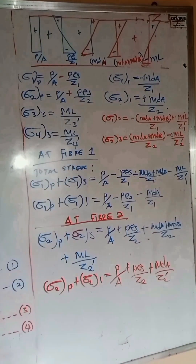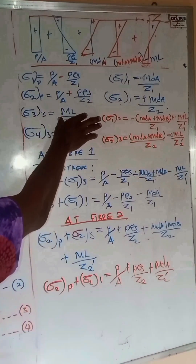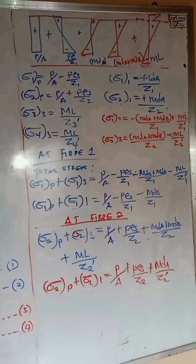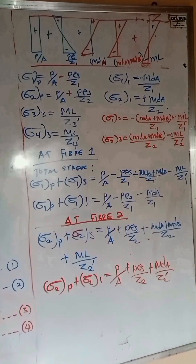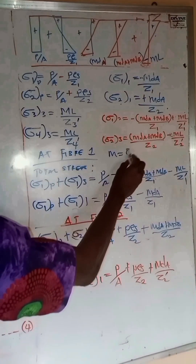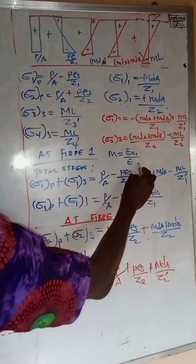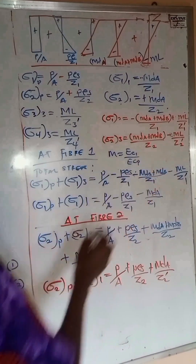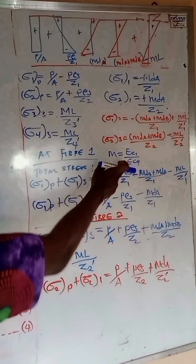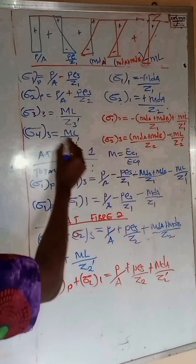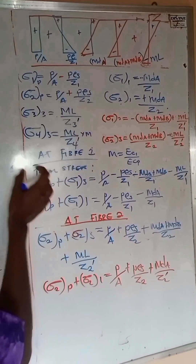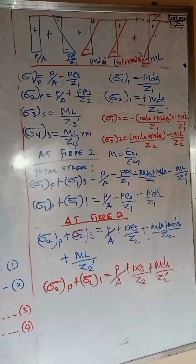The sectional modulus for fiber three is taken from the entire composite section. For fiber four, because of the presence of the composite section — the in-situ slab and precast section together — we modify the section using the modular ratio m, which is the ratio of the modulus of elasticity of the in-situ concrete to the modulus of elasticity of the precast concrete. This modular ratio m is applied to modify the section for design.